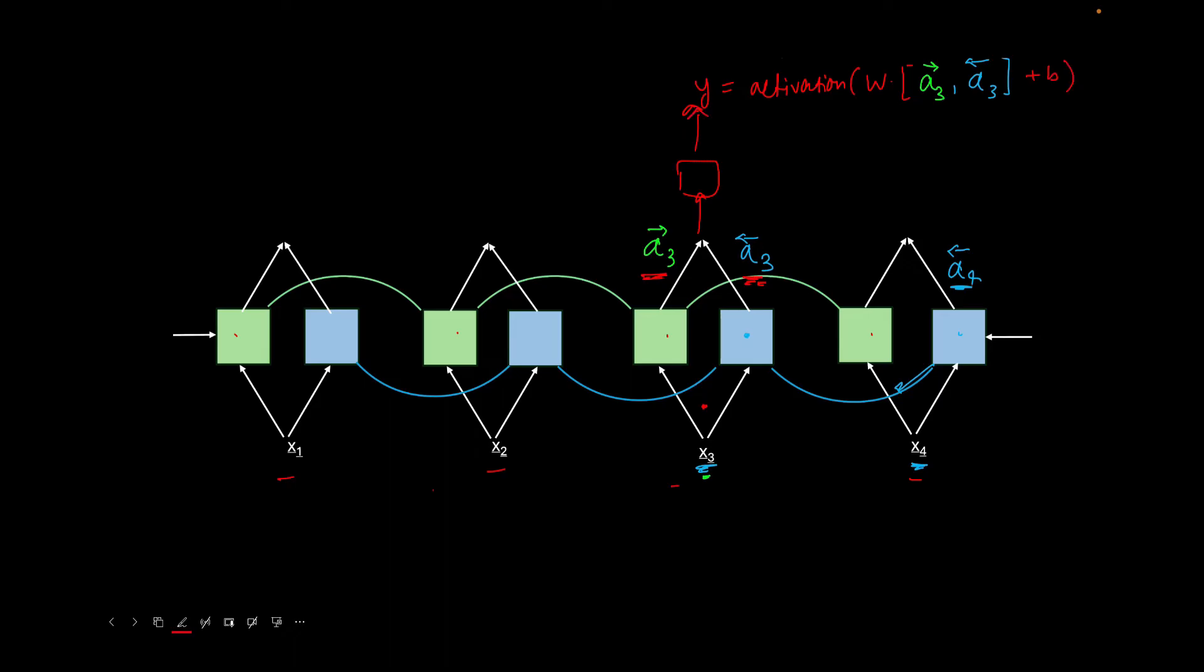If you remember in normal RNN, the equation of Y was some activation of W, A and B, and this A was only the context vector that was holding all the previous words' information. But now instead of just single A, what we have done is that we have concatenated these two A forward and backward vectors and then we are multiplying it with the weight matrix. And that's how the prediction knows about the context of all the words in the sentence.